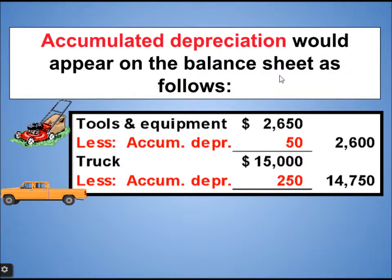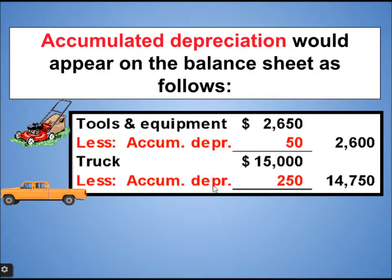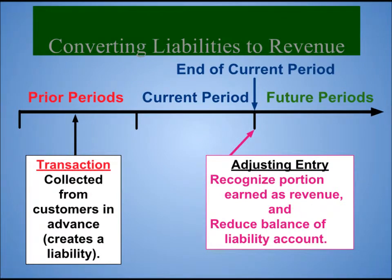Accumulated depreciation would appear on the balance sheet as follows: tools and equipment $2,650 minus accumulated depreciation of $50 equals $2,600. For the truck, the original value was $15,000 minus accumulated depreciation of $250, which becomes $14,750. This is how we do entries for accumulated depreciation.